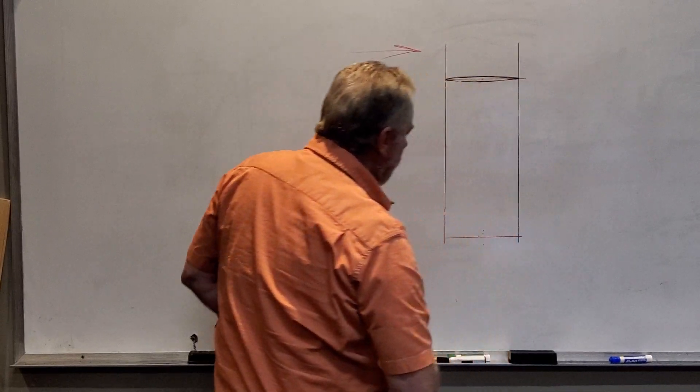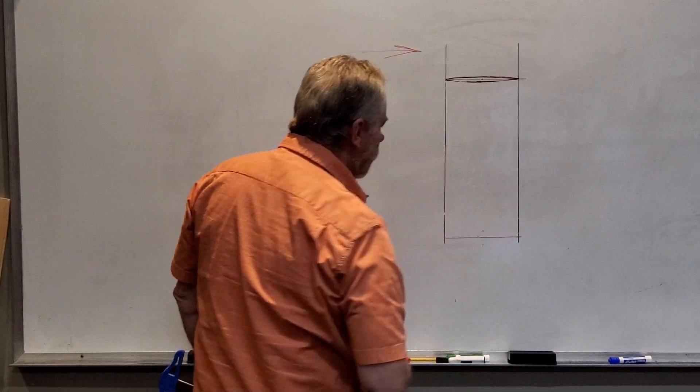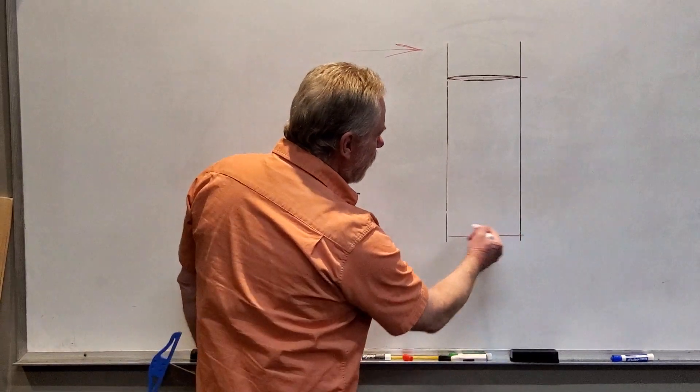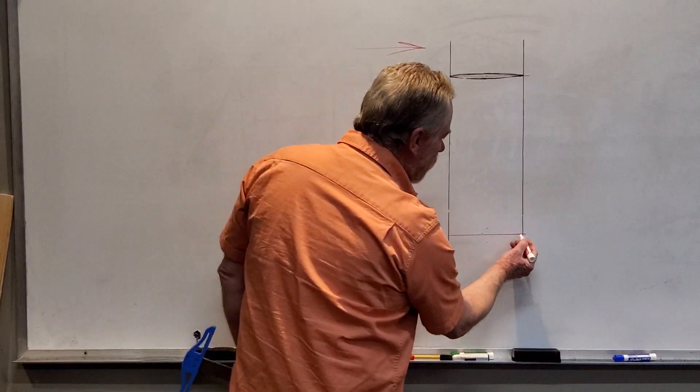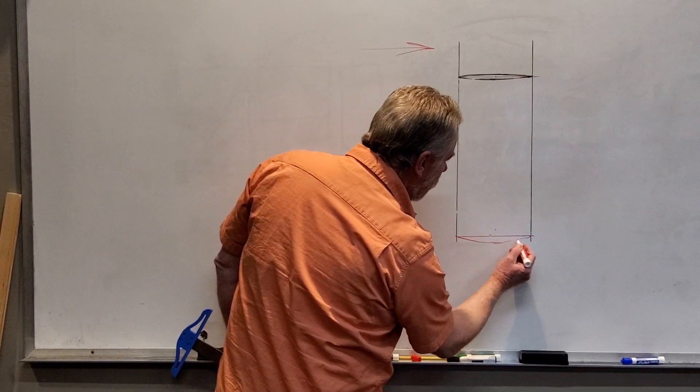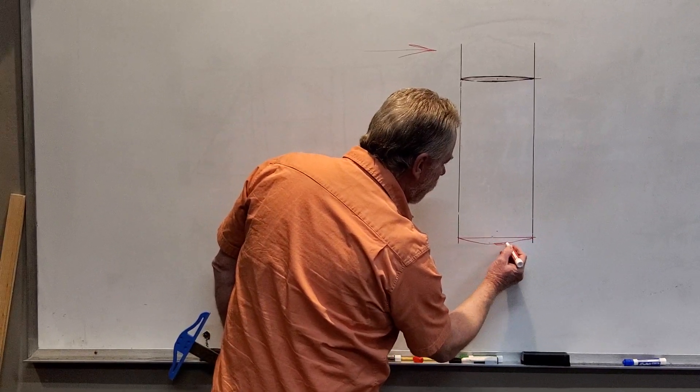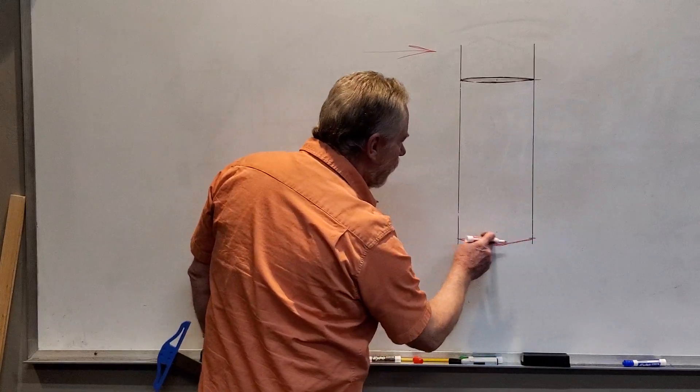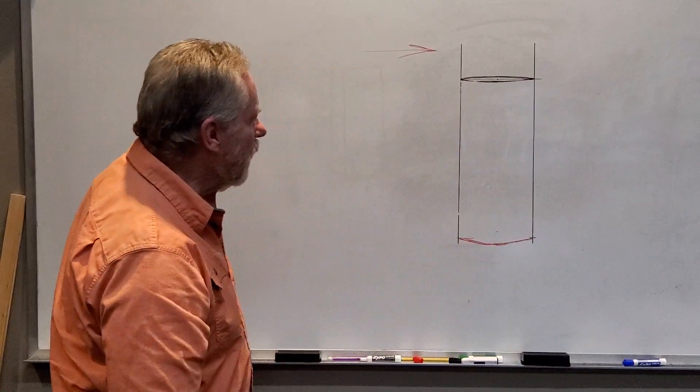Okay, now if this was transparent or translucent, as I mentioned, you'd see the whole curve, but all we can see is the front. Down here, because our cylinder is solid. So there is the bottom.